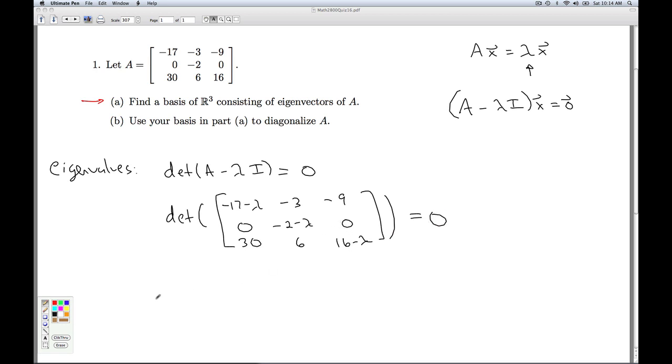And so as we've discussed in class, when you subtract lambda I from a matrix, you're just subtracting lambda off the diagonals. And I want to expand this determinant, and I look for the most efficient way to do that. And row two looks good because there's lots of zeros in there. So I follow the sign pattern plus, minus, plus, so this will be minus, plus, minus. So when I do the cofactor there,